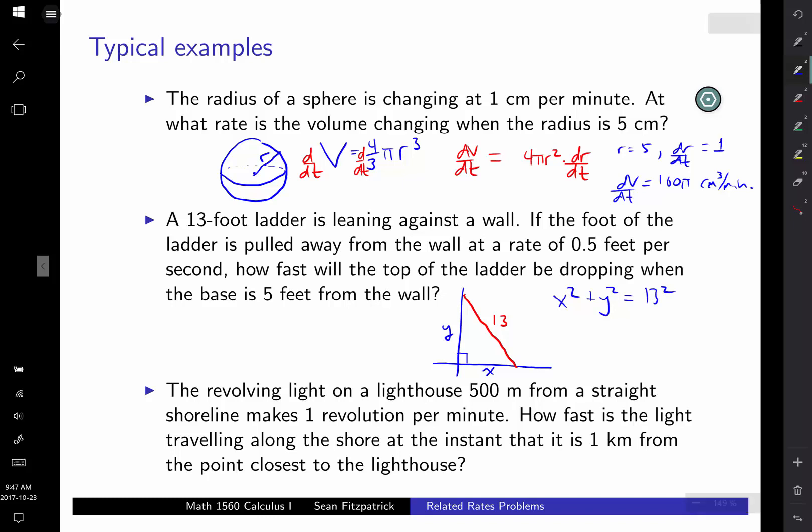you take the derivative of both sides with respect to t, keeping in mind that x and y, we're thinking of x and y as being both variables of t. So here I get the derivative of x², which is 2x. I have to multiply by dx/dt. Derivative of y² is 2y, and I have to multiply by dy/dt. The right-hand side is a constant, so there I just get 0.